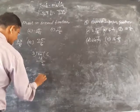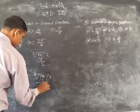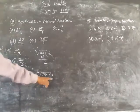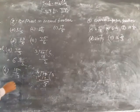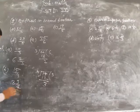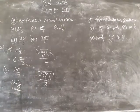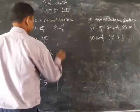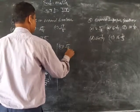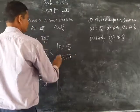Part b: 15 upon 4. So 15 divided by 4. 4 times 3 is 12, remainder 3. So the answer is 3 and 3 upon 4. So 15 upon 4 equals 3 and 3 upon 4.